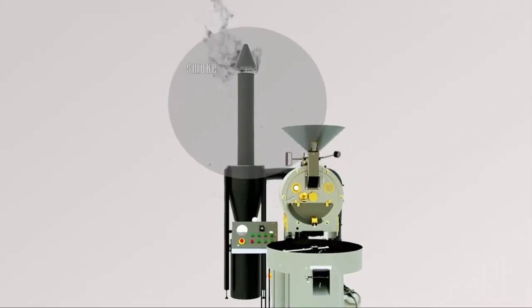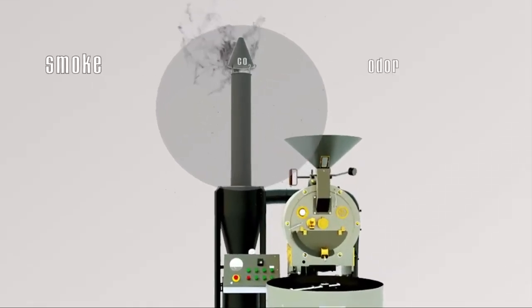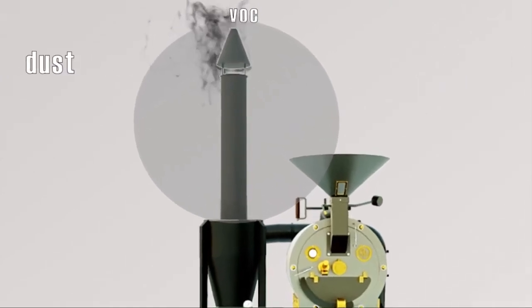Cyclones only filter chaff. Everything else escapes to foul the air and deposit flammable materials in your cyclone and stack.